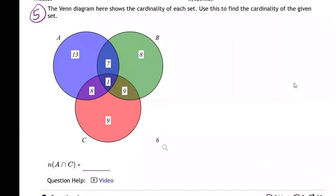Okay, so they're showing us these Venn diagrams again, and the Venn diagram here shows the cardinality. That's a fancy word, what does that mean?